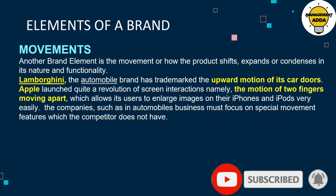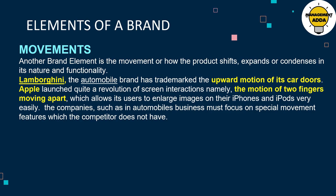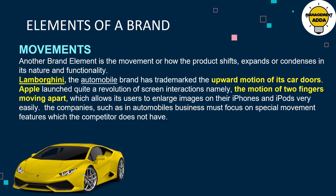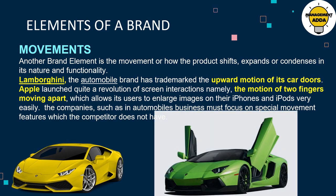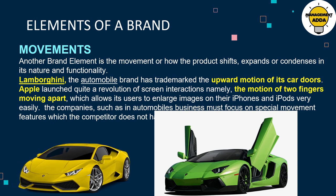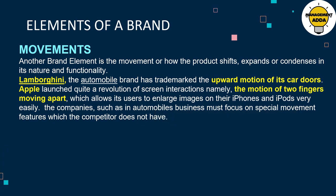The next element is movement. Movement refers to how a product shifts, expands, or condenses in its nature or functionality. For example, Lamborghini has trademarked the upward motion of its car doors. Instead of swinging out, the doors shift upward, and this movement has been trademarked by the brand.